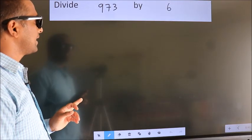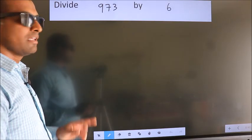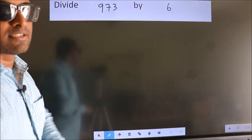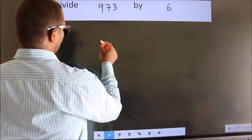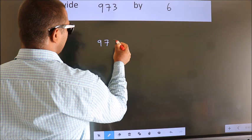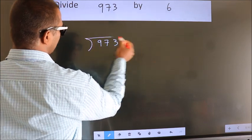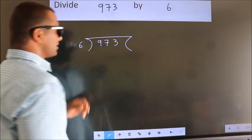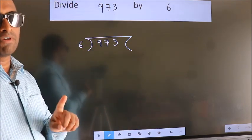Divide 973 by 6. To do this division, we should frame it in this way: 973 here, 6 here. This is your step 1.